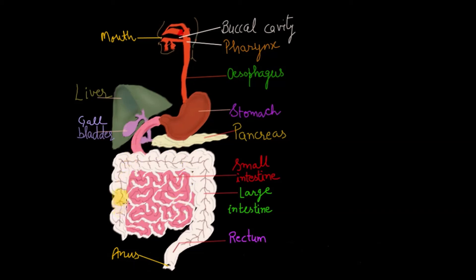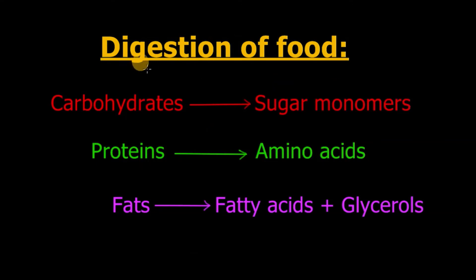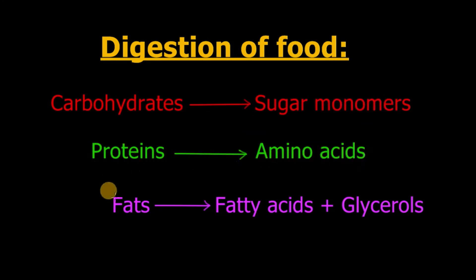The role of the large intestine is to help in the absorption of water. So the digestive system digests the food. After digestion: carbohydrate molecules break down into monosaccharide units or sugar monomers, protein molecules are broken down into amino acids, and fat molecules are broken down into fatty acids and glycerol. After digestion, all these substances are absorbed into the bloodstream.